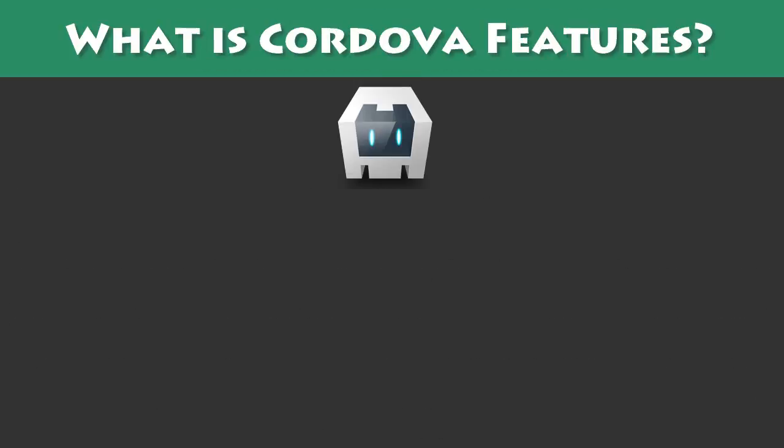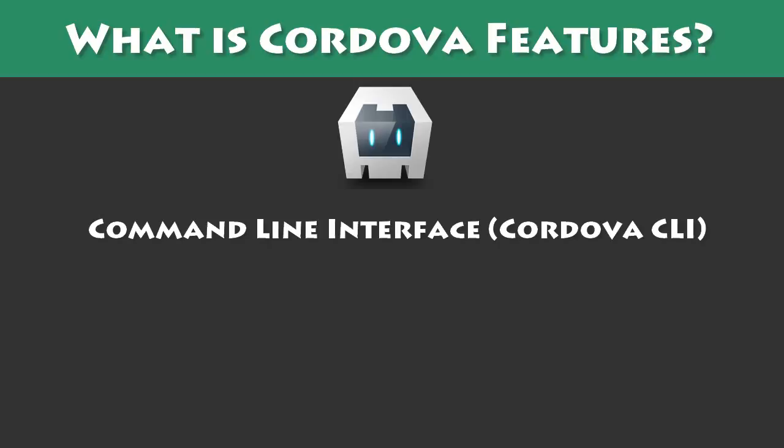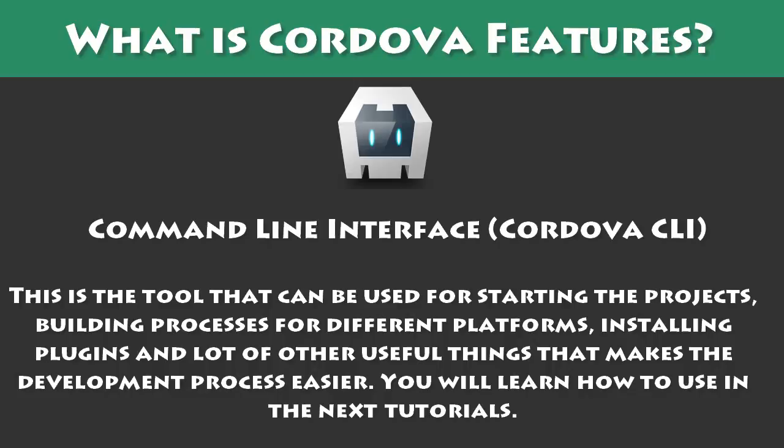What are Cordova's Features? First, Command Line Interface — Cordova CLI. This is the tool that can be used for starting projects, building processes for different platforms, installing plugins, and many other useful things that make the development process easier. You will learn how to use it in the next tutorials.